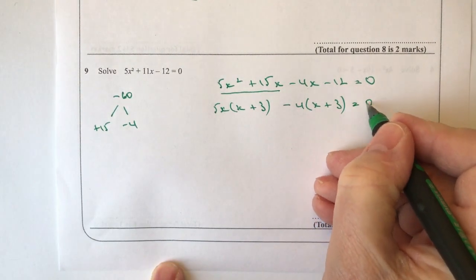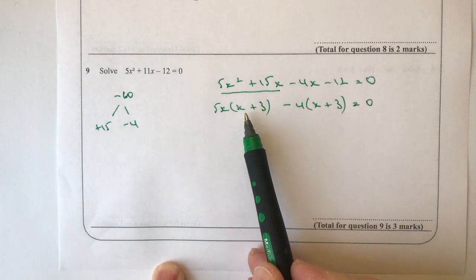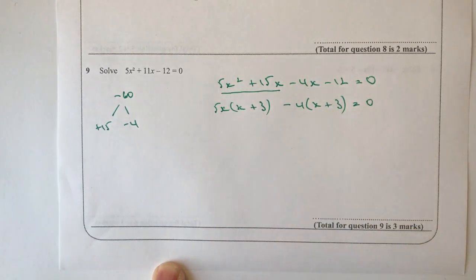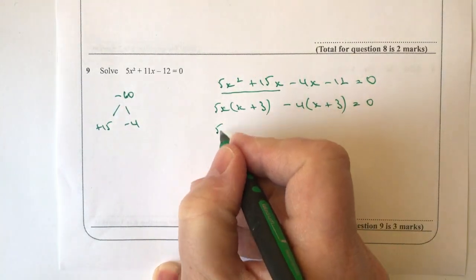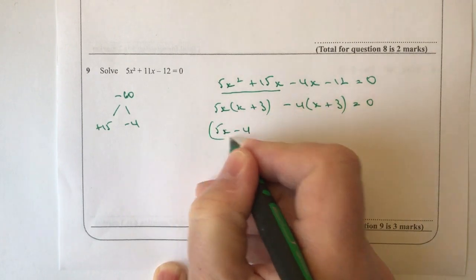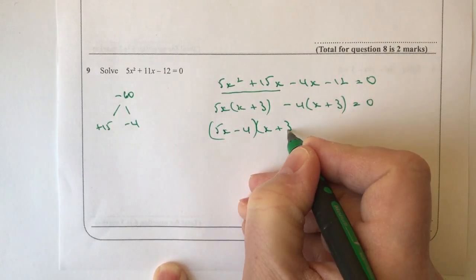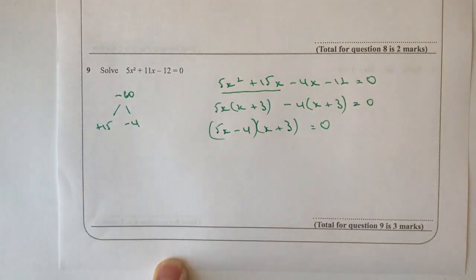Now that equals zero, and what I've got is two bracketed terms which are the same. So therefore I can take those out and I can write that as (5x - 4) multiplied by (x + 3), and that equals zero.